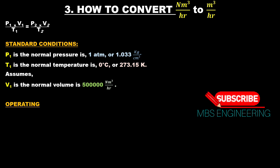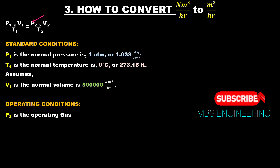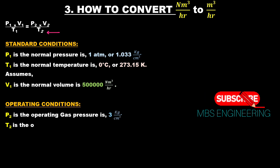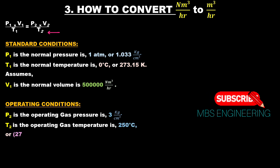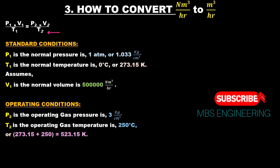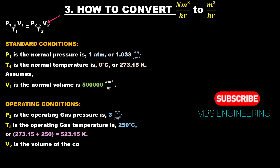The operating conditions are: P2 (operating gas pressure) = 3 kilograms per centimeter square; T2 (operating gas temperature) = 250 degrees Celsius, which equals 273.15 + 250 = 523.15 Kelvin. V2 is the volume of the compressed gas in m³/hr, which we need to calculate.